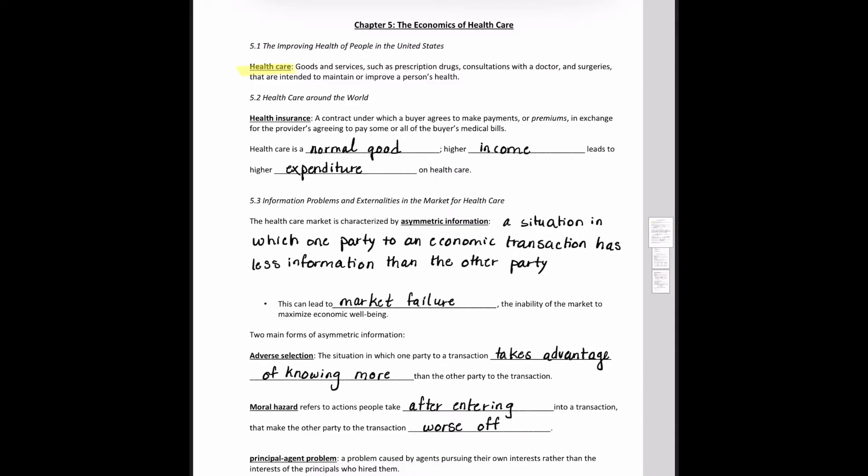There are some important differences between the healthcare systems of the US and other countries related to who provides for the healthcare and who pays for it. Most healthcare in the US is provided by private firms paid through health insurance. Health insurance here just defined is a contract under which a buyer agrees to make payments or premiums in exchange for the provider agreeing to pay all or some of the medical bills. Healthcare itself is a normal good, which means that higher income leads to a higher expenditure on healthcare. There's also some insurance payments in the form of fee for service, where doctors and hospitals receive a payment for each service they provide, or there's also HMOs, health maintenance organizations, where doctors receive a flat fee per patient that they treat.